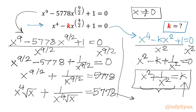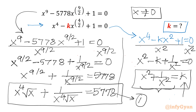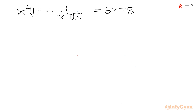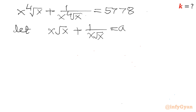We call this equation number 1. With it, we need to calculate x² + 1/x², which equals our required k. Let us consider the substitution: let a equal to x√x + 1/(x√x). The condition on a is that a is positive since x is positive. Now we cube both sides.